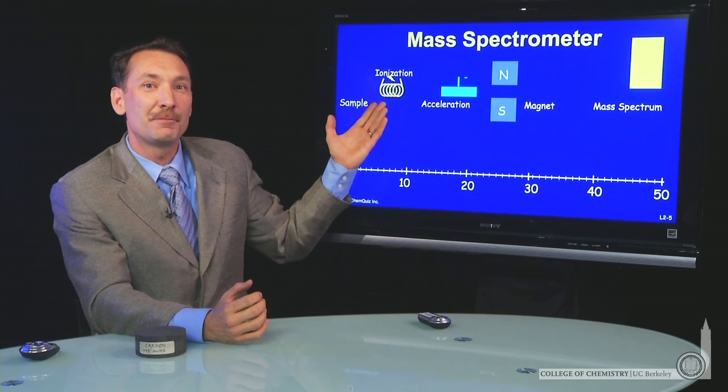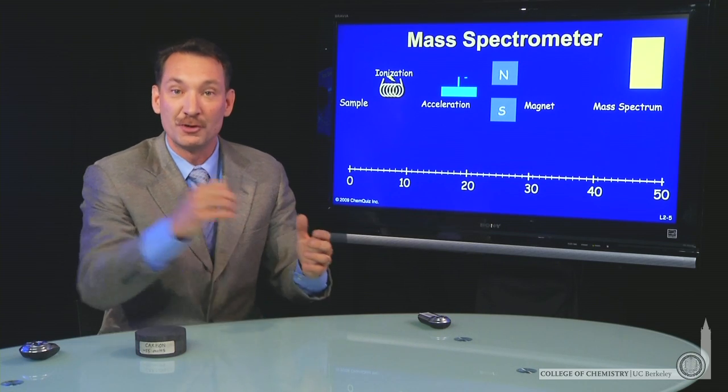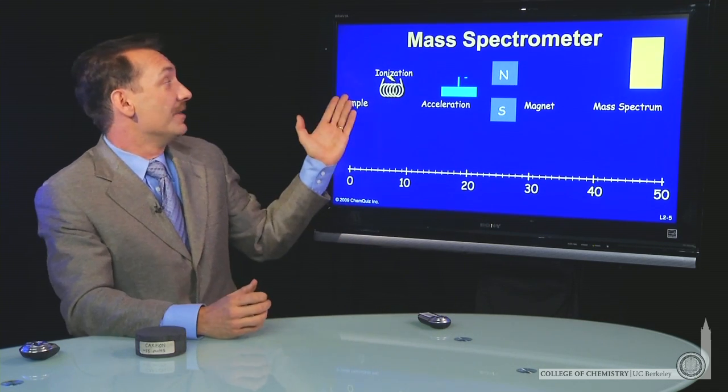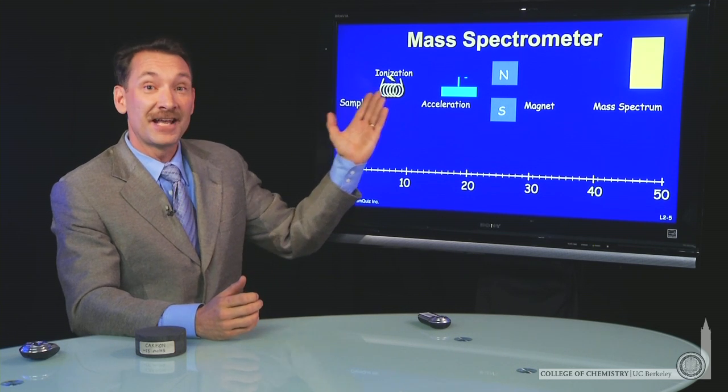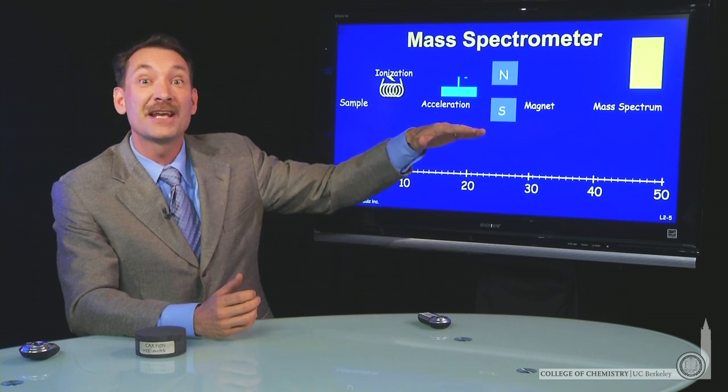In a mass spectrometer, you take a sample and you ionize it. And by ionization, we mean stripping off electrons. In this case, we strip off all the electrons. The sample is then accelerated towards an electric field and directed through a magnetic field.